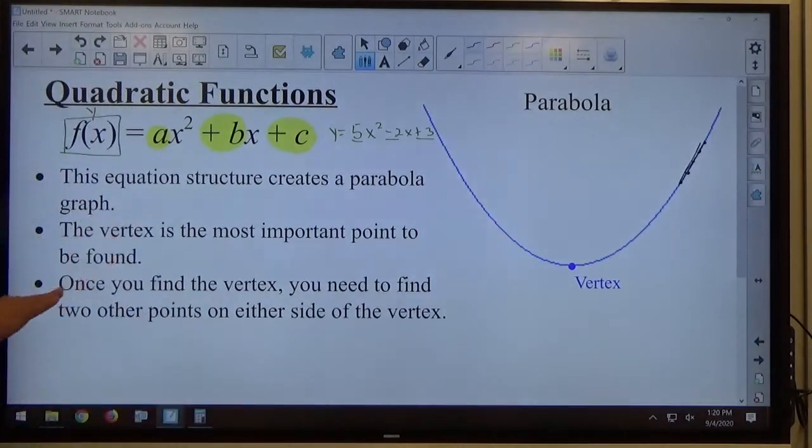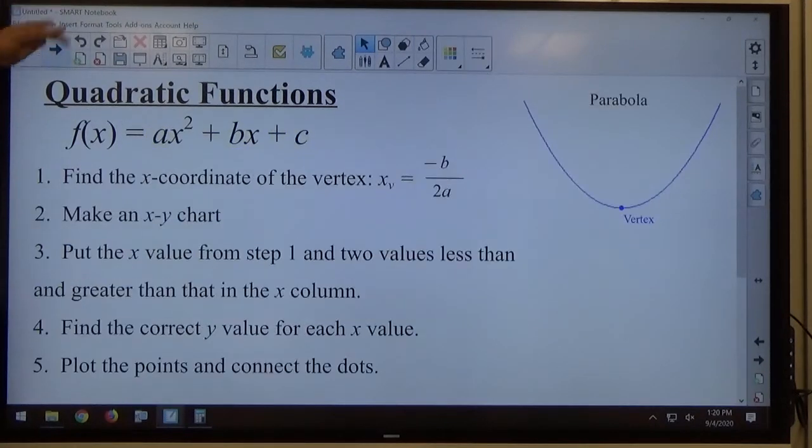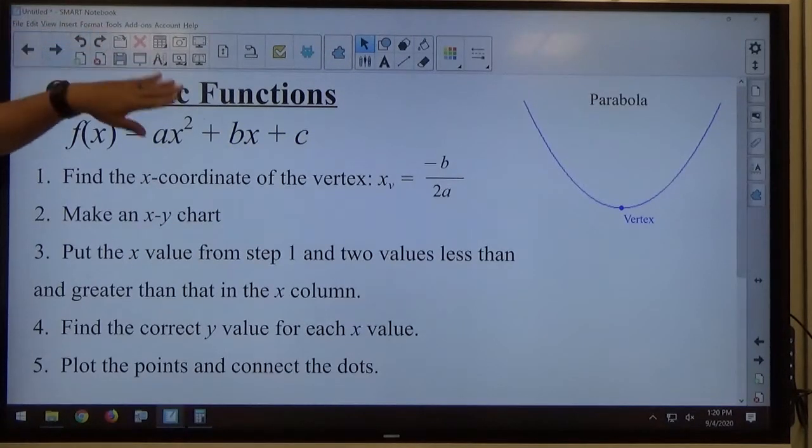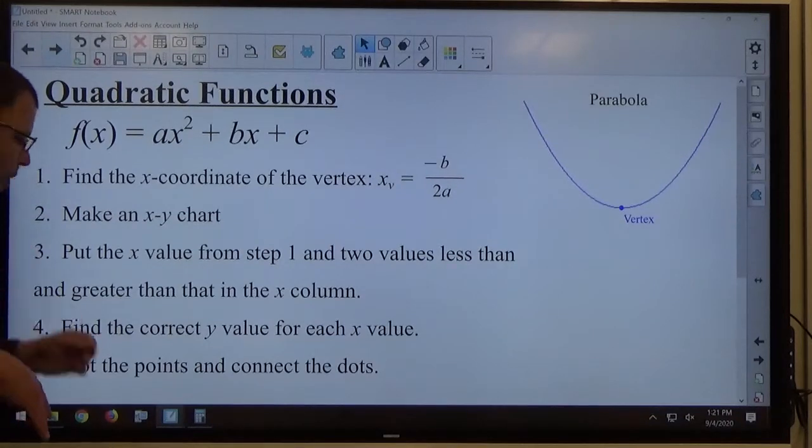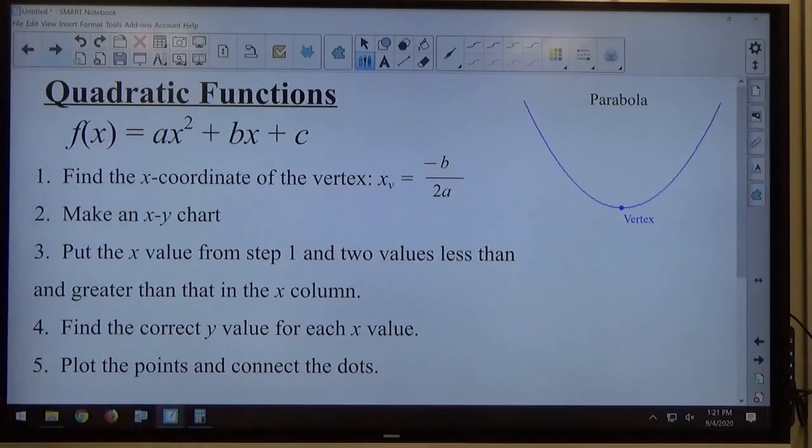Once you find where the vertex is, you need to find two other points on either side of the vertex, and the technique itself is right here. Okay, so, same parabola there, vertex is still down there. The first step here is the vertex formula. Okay, this is one way to find the vertex, there's several different ways. This is probably the easiest way to do it for right now. When we learn some more math skills, we might look at a couple other ways to do it, you might like those better, who knows. But for now, this will suffice to get us what we need.